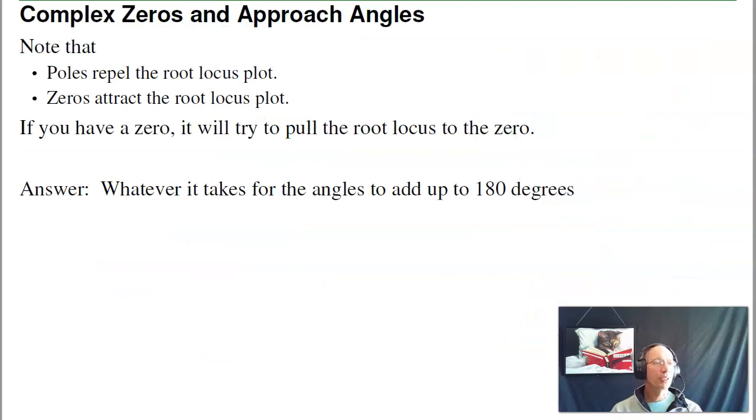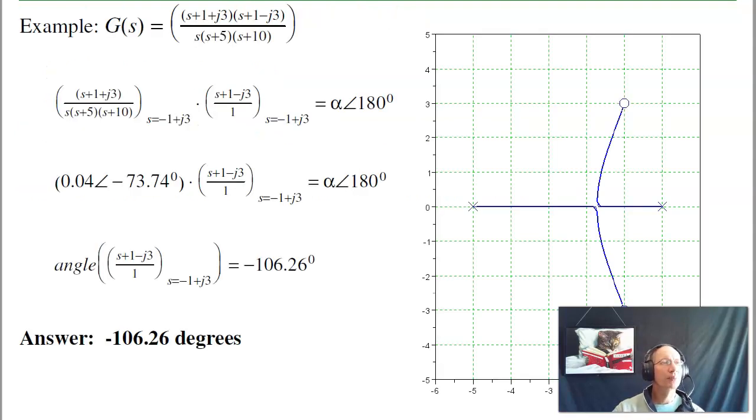Zeros are the opposite of poles. When you leave a pole at a departure angle, you approach a zero at the approach angle. So again, if I have this system, three poles. Where's the third pole? Oh, the third pole is over here at minus 10. And two zeros at minus 1 plus minus j3. Calculate the approach angle.